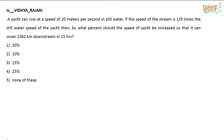What is given? A yacht can row at a speed of 20 meters per second in still water. The speed of the stream is 1/9 times the still water speed of the yacht. By what percentage should the speed of the yacht be increased so that it can cover 1362 kilometers in 15 hours? Note that speed is given in meters per second but distance is in kilometers and time is in hours.